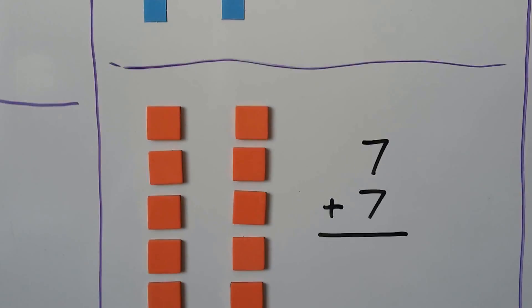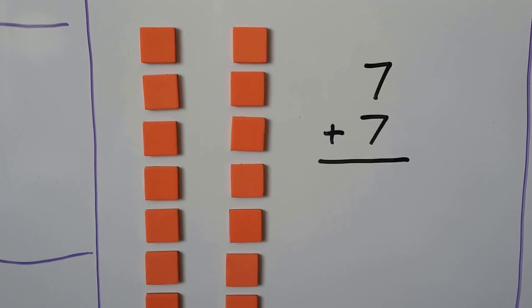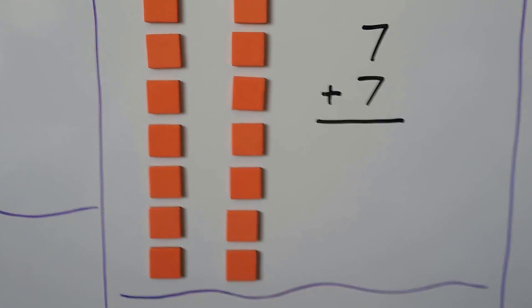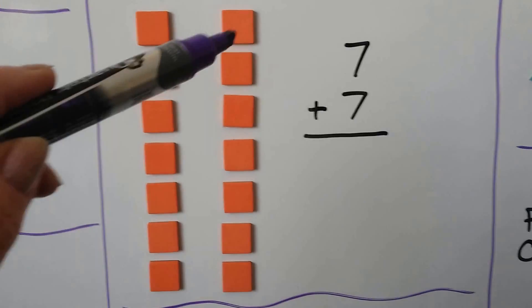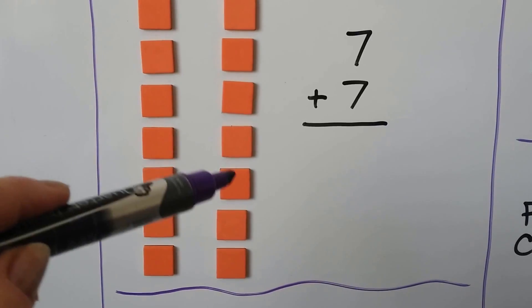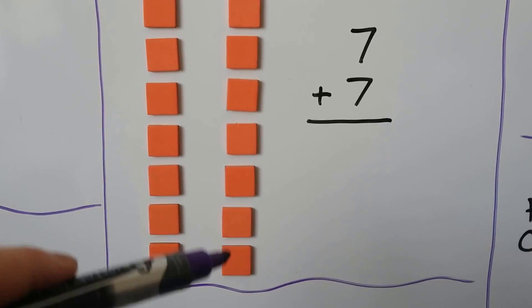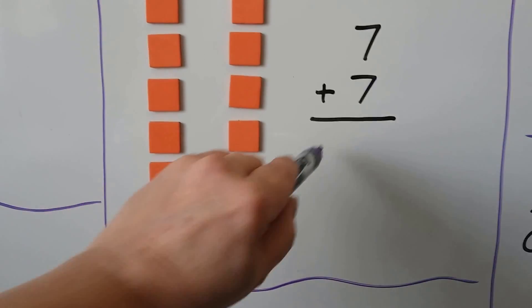We can count on from the 7: 8, 9, 10, 11, 12, 13, 14. So 7 plus 7 is equal to 14.